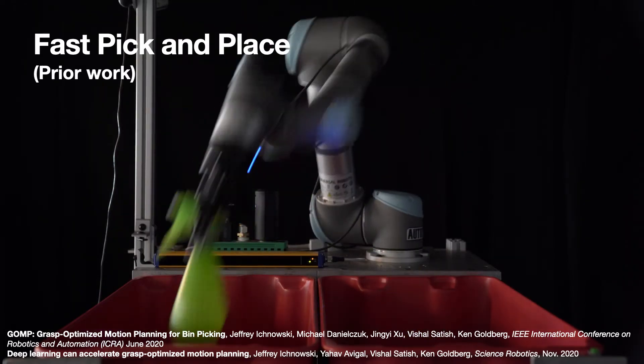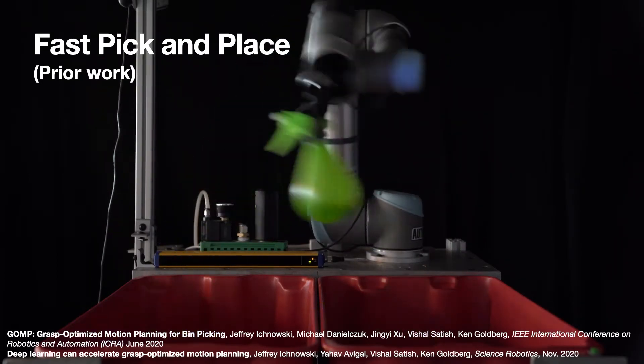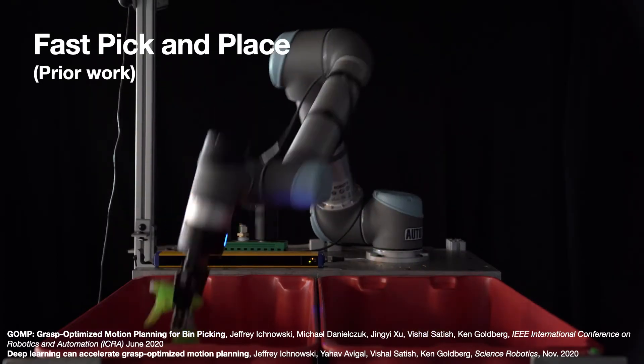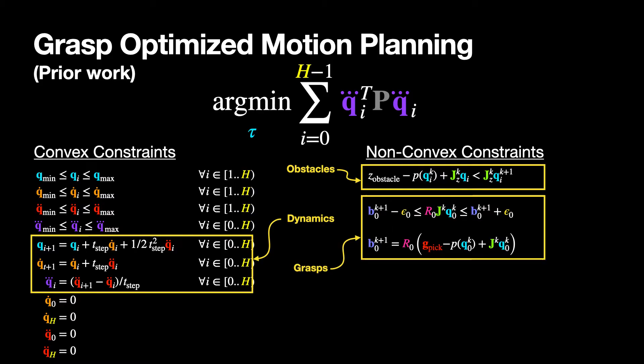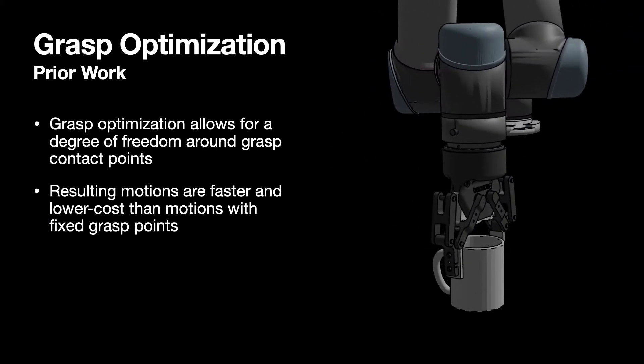we build on prior work that explored speeding up pick-and-place operations by incorporating dynamic limits and grasp optimization into an optimizing motion planner. The dynamic limits allowed for computation of time-optimal motions, while grasp optimization allowed for degrees of freedom in pick-and-place points,